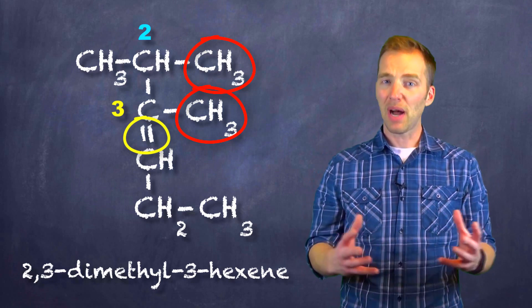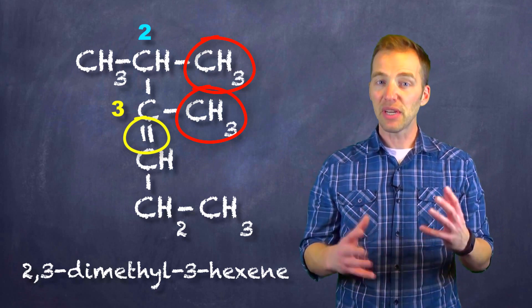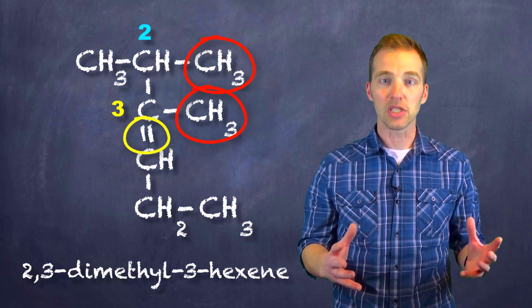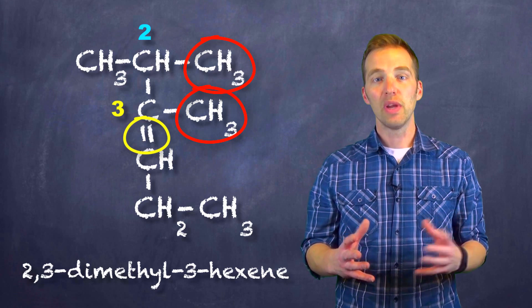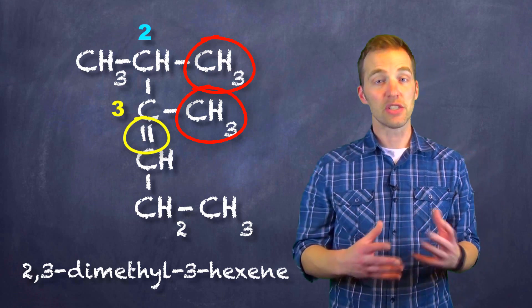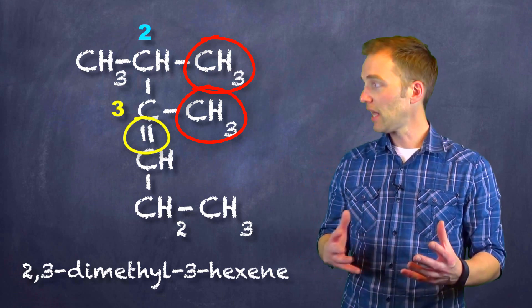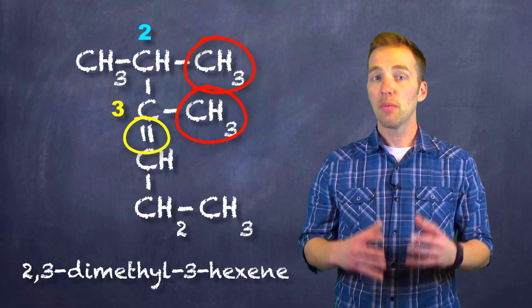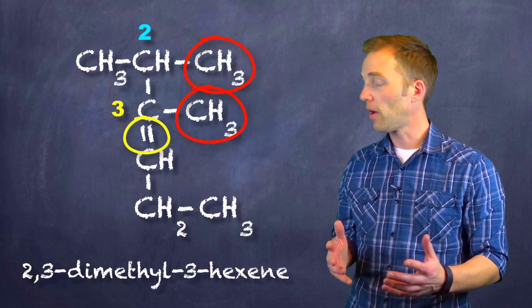So really what we've done is we've combined the idea of the prefix indicating the number of carbons, much like we did with alkanes. We've put position numbers into things that could appear in more than one place, like the side groups from our branch chain. We started applying that to multiple bonds.